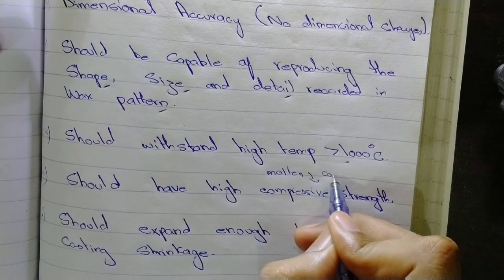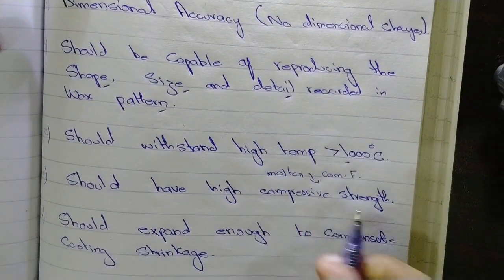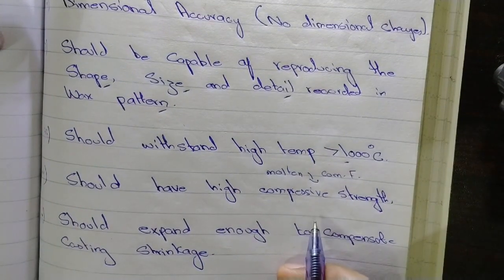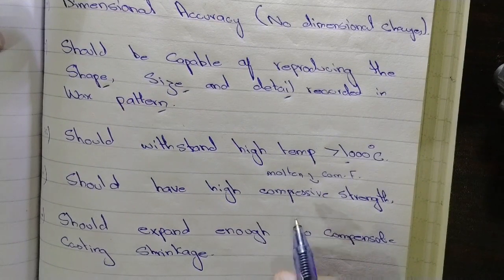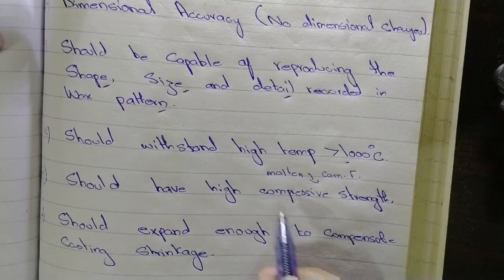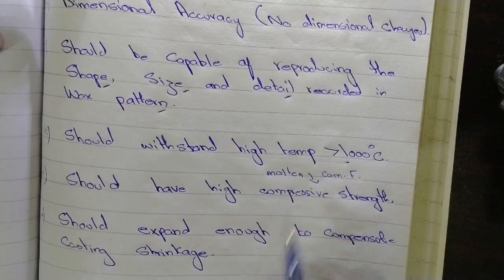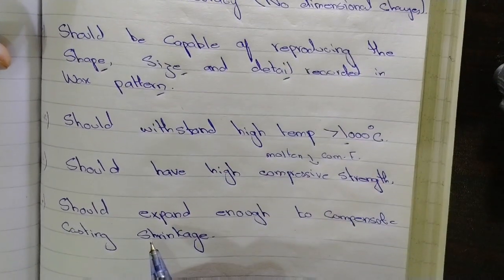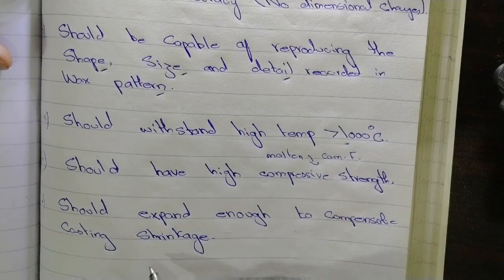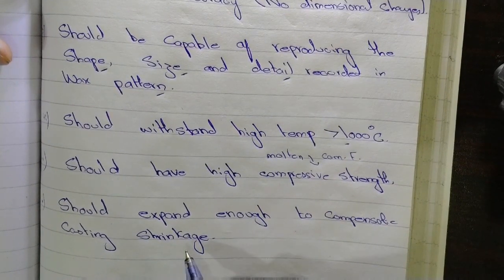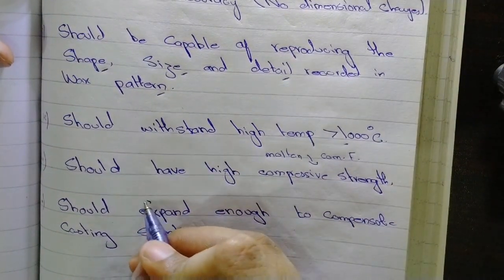Your investment material should have high compressive strength so that it can bear the compressive forces. Lastly, the investment material should expand enough to compensate for casting shrinkage.